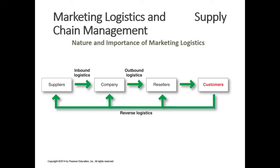Supply chain and logistics are very important parts of getting products to end customers. These logistical trails, like the supply chain, have to add value. Logistical companies getting supplies from suppliers to your company might provide a speed element. Outbound logistical companies might get the end product to the reseller in a way that's not only fast but safe and secure depending on the product being sold.